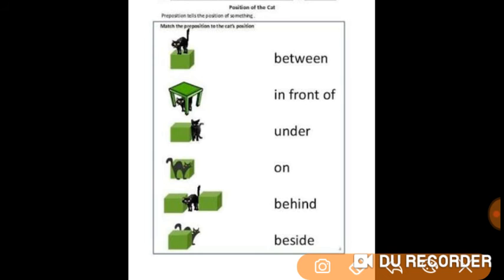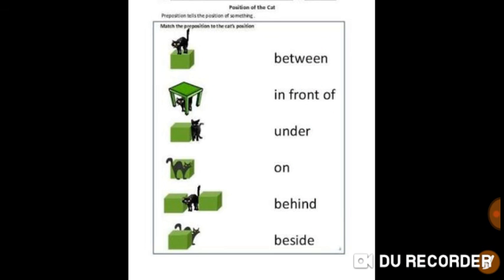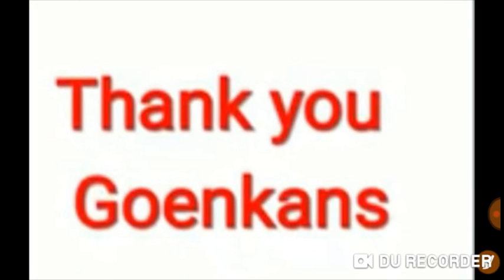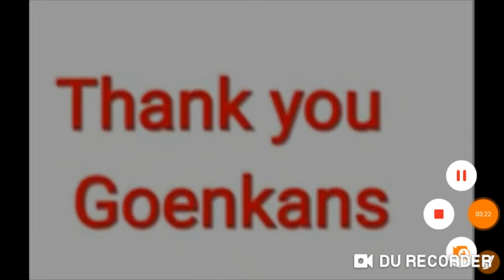The words between, in front of, under, on, behind, and beside — all these words are prepositions as they describe the position of the cat. This is all for today. Thank you Koinkans!